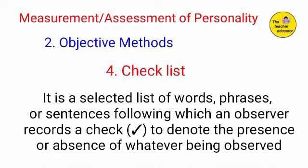A checklist is a selected list of words, phrases, and sentences, following which an observer records a check to denote the presence or absence of whatever is being observed. In the checklist, some statements, words, phrases, and sentences are given, and a tick mark or check mark is used. When we want to assess whether some traits are present in the behavior of an individual or not, we use the checklist method.